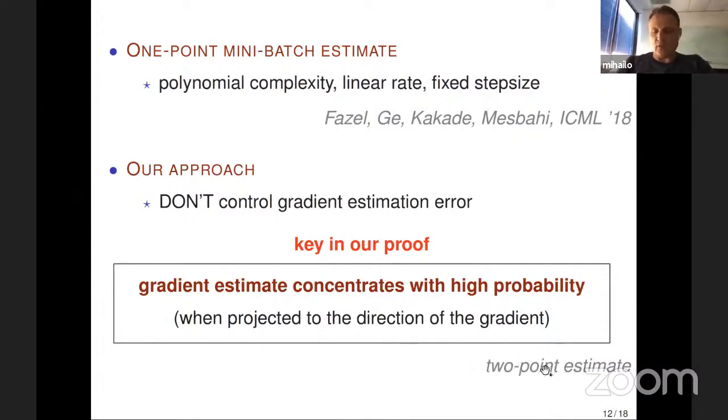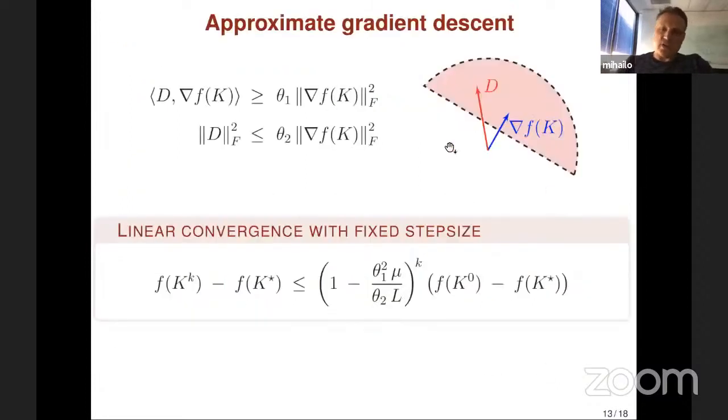All of our results hold for two-point estimates. The way we managed to show this is that rather than using gradient descent, we utilize approximate gradient descent. It's a standard fact in optimization that you can achieve linear convergence with fixed step size as long as your direction has large enough projection in the direction of the true gradient and as long as its norm is not too big relative to the norm of the true gradient. This holds in deterministic setup and in our work, we showed that these two events hold with high probability.